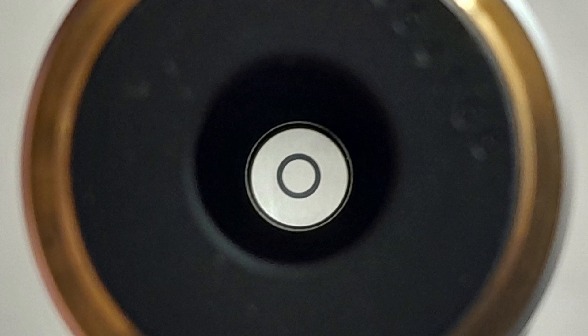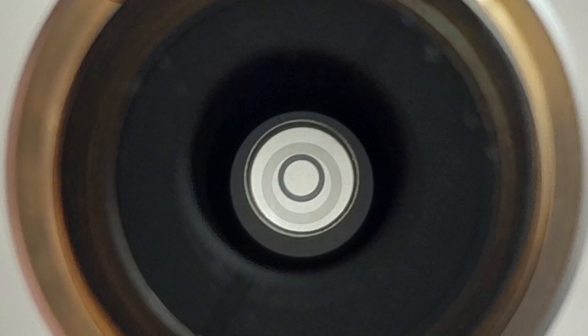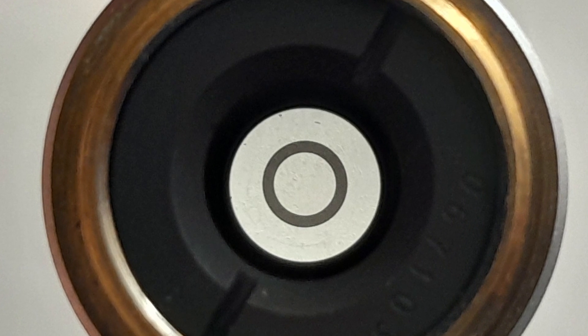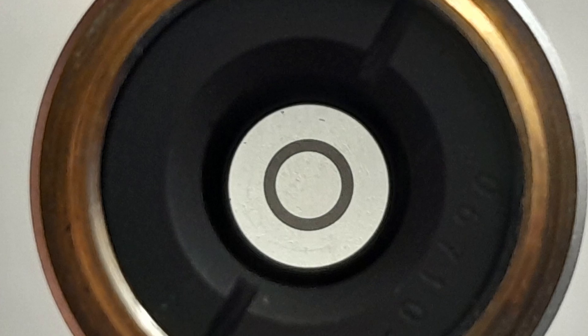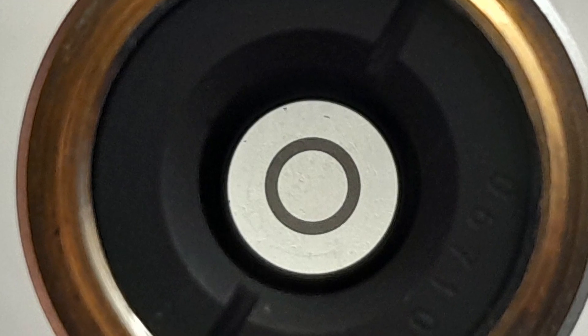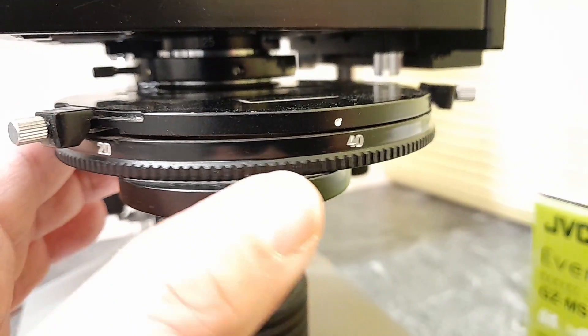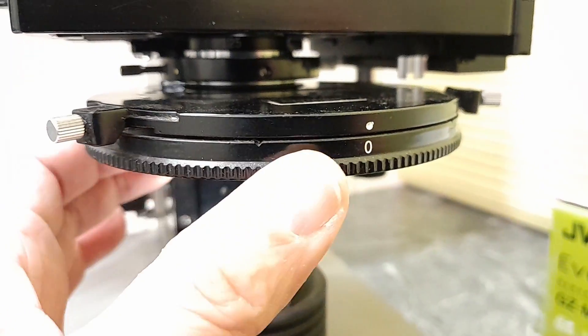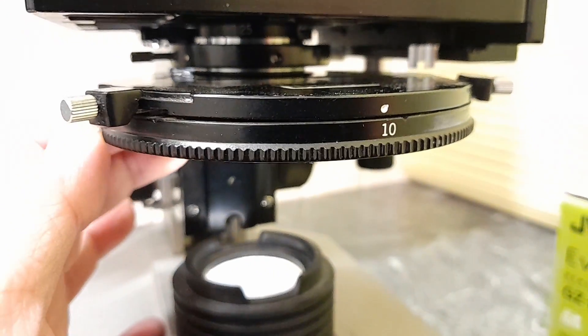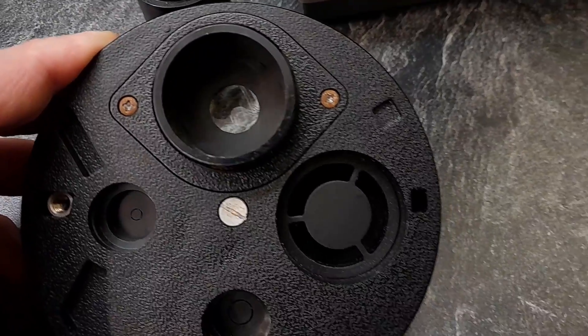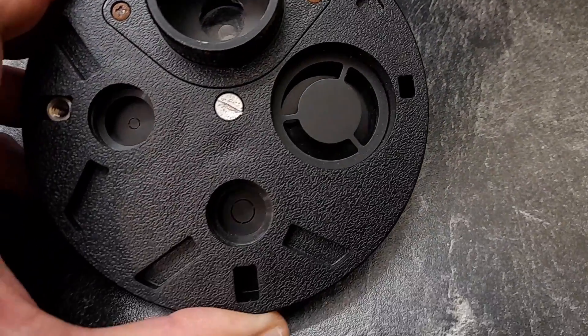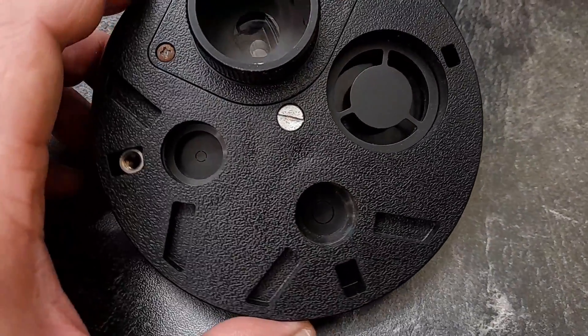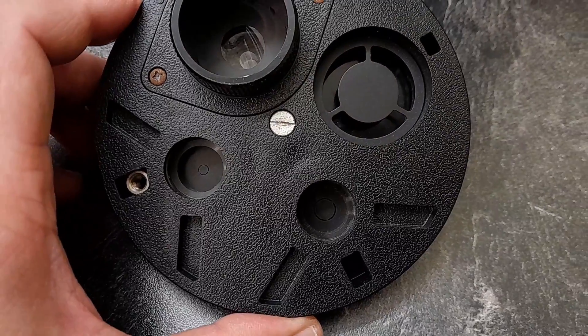And here, this is a phase ring. So when you take out a phase contrast objective and look at it from behind, then you're able to see this phase ring, which is semi-transparent. You also need a phase contrast condenser. And in this case, it's a rotating condenser, which allows you to use phase contrast besides bright field and also dark field. So it's a multipurpose condenser. The two phase annuli are for 10 times and for 40 times.